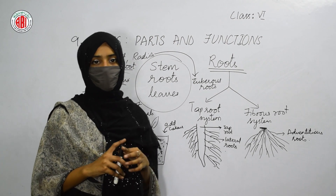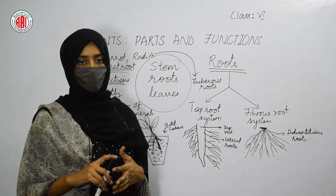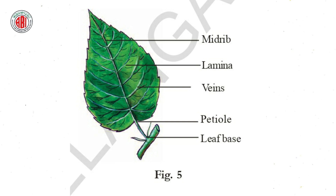In our surroundings there are many plants bearing different types of leaves. The main base of the leaf is called the lamina, and one stalk-like structure called the petiole attaches the leaf to the stem. In the lamina, the long vein in the middle is called the midrib, and the thin divisions present in the lamina are called veins.